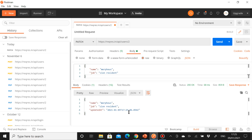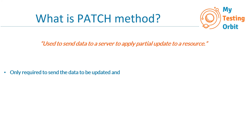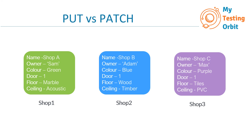That shows how the PATCH method works. Let's go back to our slides and look at the difference in more detail, because PUT and PATCH look quite similar. It's a very common misconception that PUT and PATCH do the same thing — and while the main function of both is to update a resource, in reality they do it very differently.